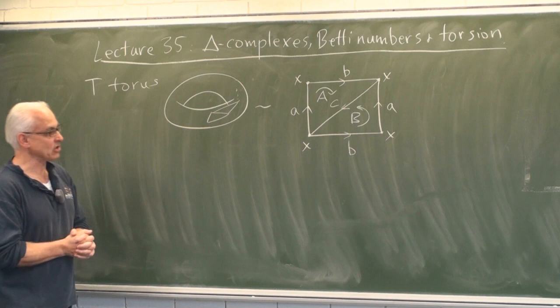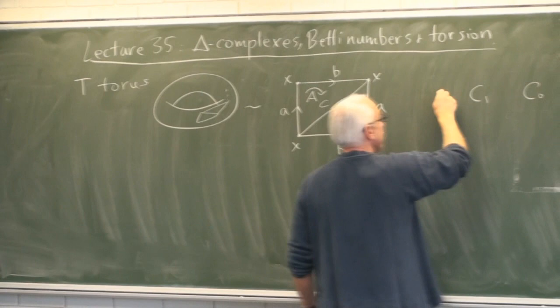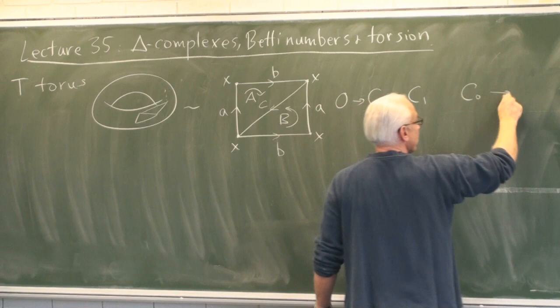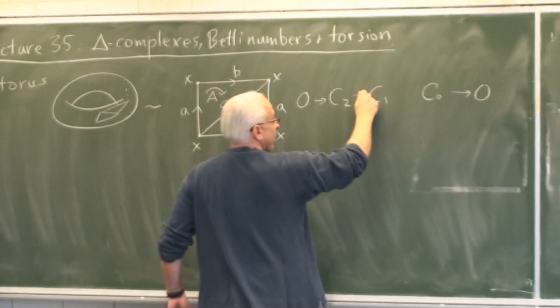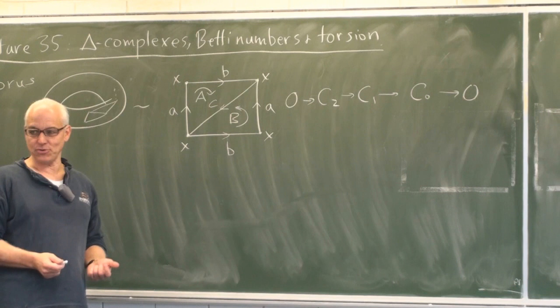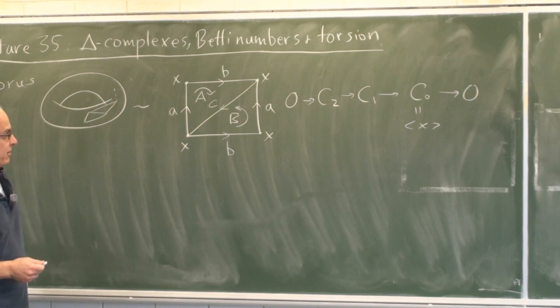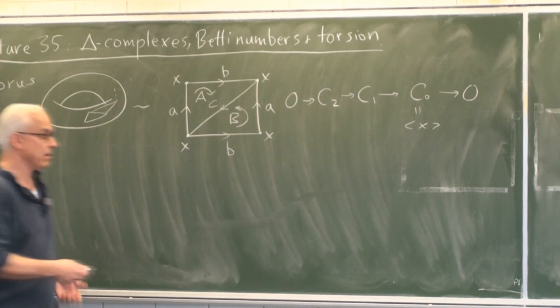We're just going to work algebraically with this setup. Let's set up the chain complexes: C0, C1, C2, and C3 — though there are no three-dimensional chains. C0 talks about the vertices — there's only one vertex, called X. So C0 is just the group generated by X. The one-chains: there are three edges, A, B, and C, so C1 is generated by A, B, and C.